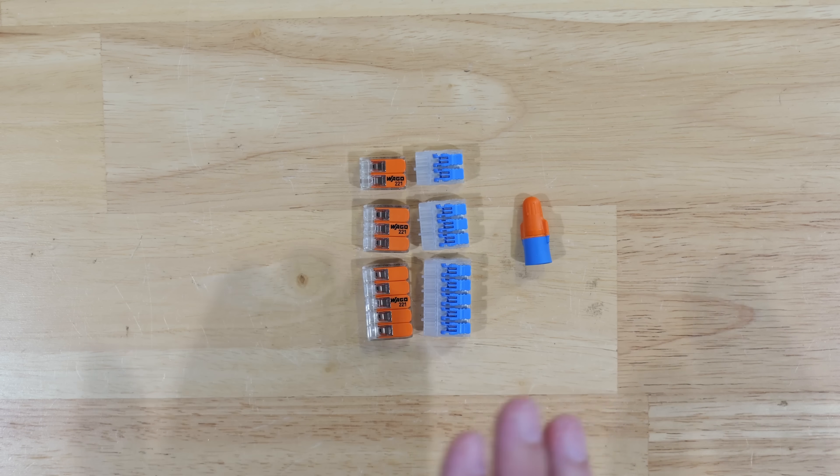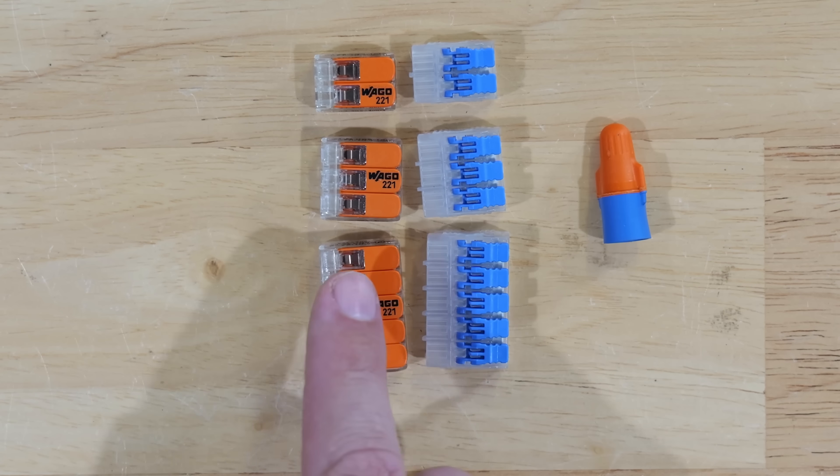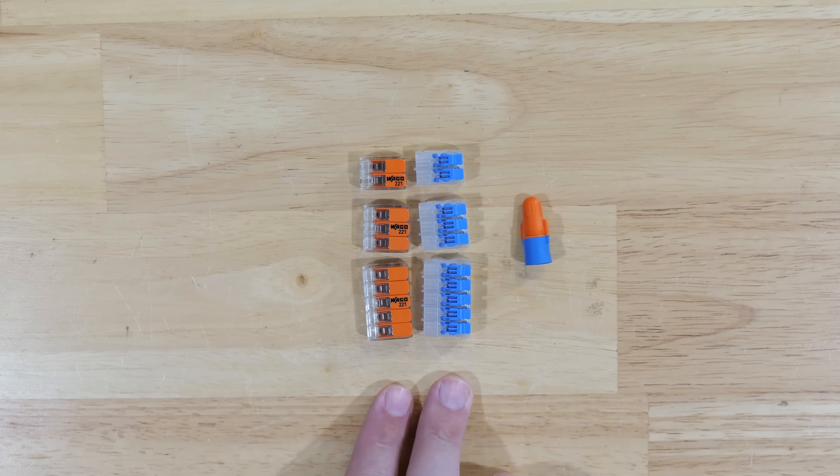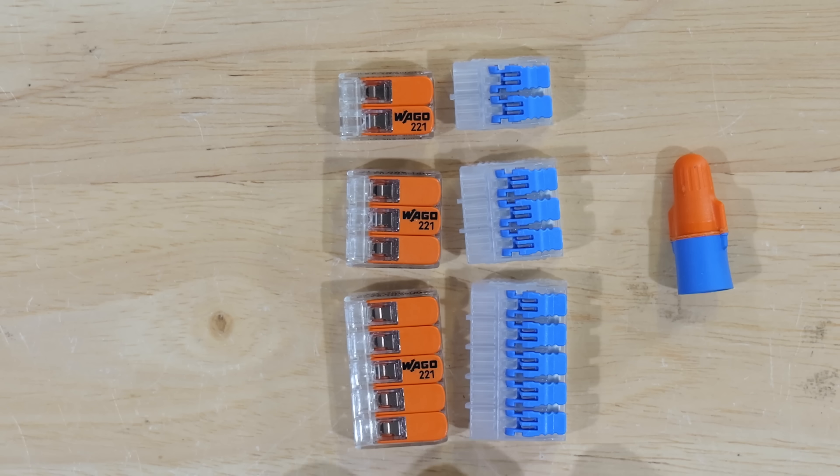When we compare the lever nuts and the wire nut, the capabilities of these are slightly different. The two different brands of lever nuts, the WAGOs and the Ideal Ensure lever nuts, are capable of handling up to 450 volts, whereas the 3M Performance Plus wire nut is capable of handling up to 600 volts. So 150 volt difference. The two lever nuts are both the same in their capability as far as amperage as well. They're able to handle up to 32 amps.